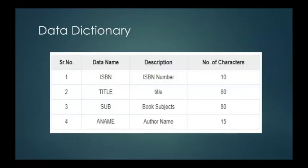This is an example of a data dictionary. We have four columns: serial number, data name, description, and the number of characters. For number one, we have ISBN or ISBN name with 10 characters. Two, we have title with 60 characters. Number three, we have sub or the book subjects, which have 80 characters. And number four, we have a name or the author name, which has 15 characters.